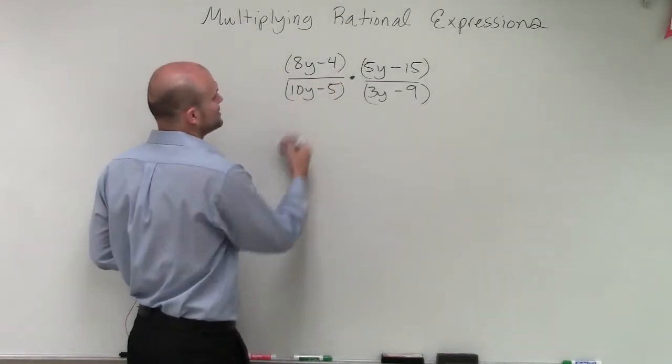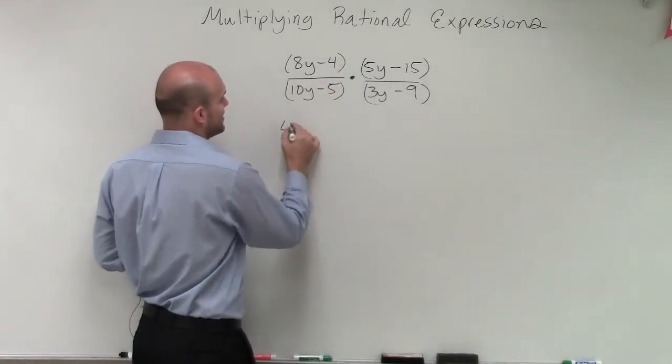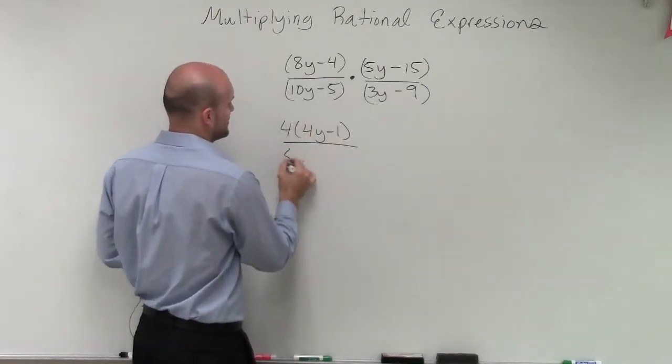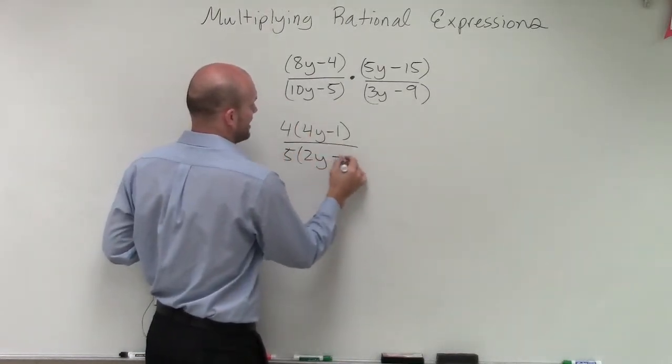So what I'm going to do is I'm just going to do each term. Up here, I know I can factor out a 4, which will leave me with a 4y minus 1. Over here, I can factor out a 5, which will leave me with a 2y minus 1.